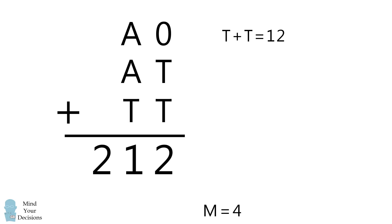Therefore, we must have T plus T is equal to 12. This means T is equal to 6, and we can then go ahead and solve that A must be equal to 7.